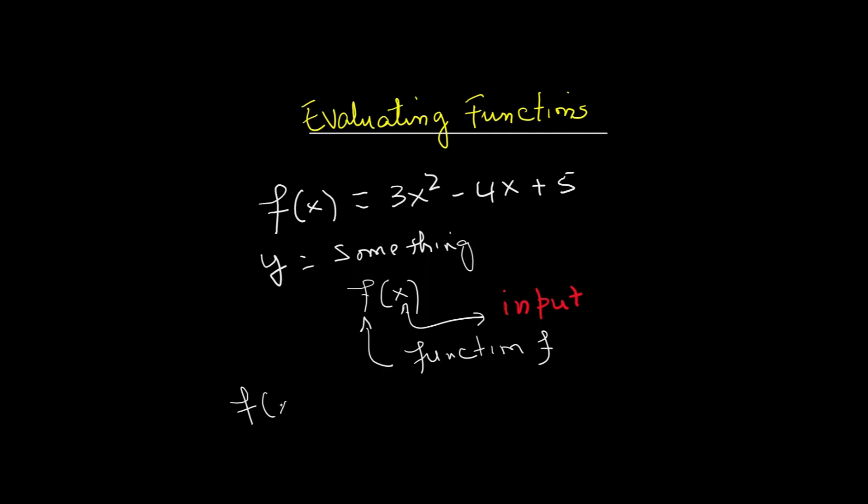Let's say we have a function f(x) = 3x² - 4x + 5. That just means to find the output, take the input, square it, multiply by 3, subtract 4 times the input, then add 5.